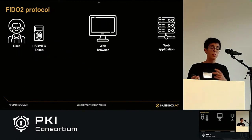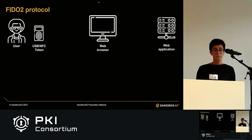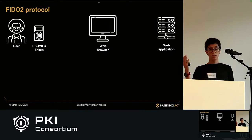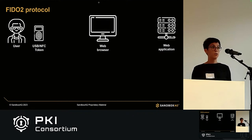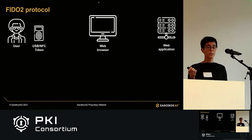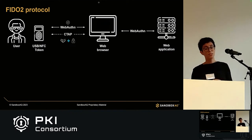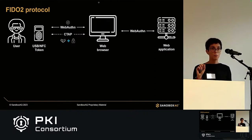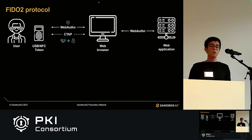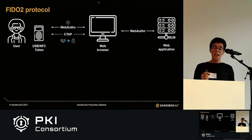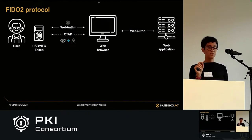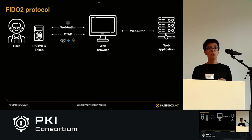The protocol has four main participants. We have the user who wants to authenticate into a remote web application. They will access it through a web browser and use a secure hardware token to do that. The protocol has two sub-protocols: WebAuthn governs the communication between the hardware token, the browser, and the server. The user must authorize certain operations on the hardware token. CTAP is the protocol that governs communication between the token and the browser, and is intended to ensure that only a specific browser is allowed to communicate with the hardware token.